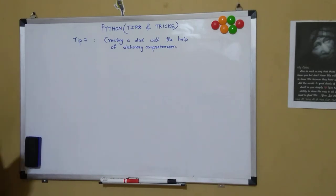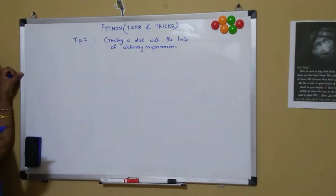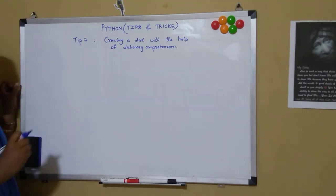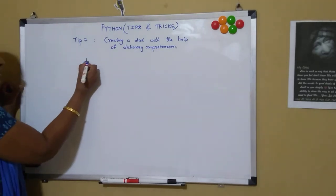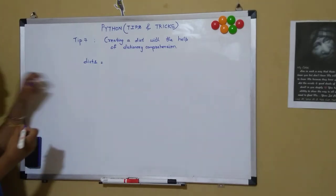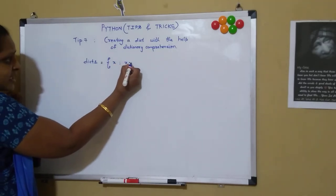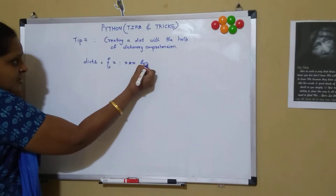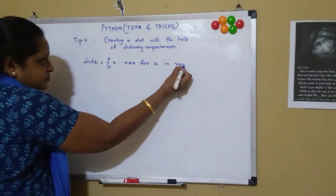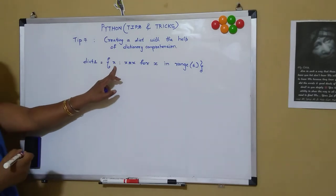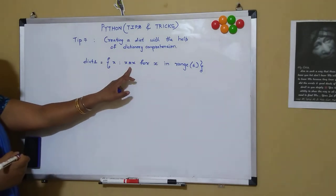So how can we create a dictionary with the help of dictionary comprehension in just a single line of code? Suppose if I want to have a key value equal to one and the value equal to the square of the key value, that is one into one. So if I want to have a dictionary for a range of numbers, I can go for dictionary comprehension. So dict1 is the dictionary which I am creating with the help of x colon x into x for x in range 6.